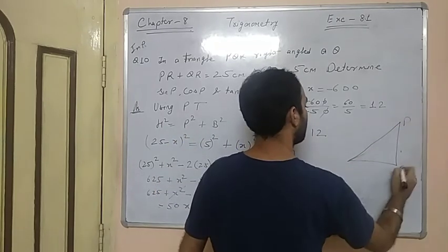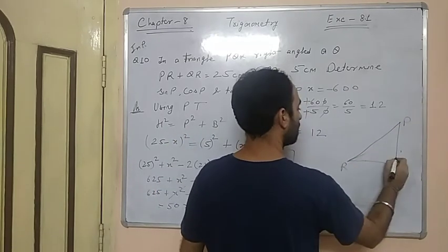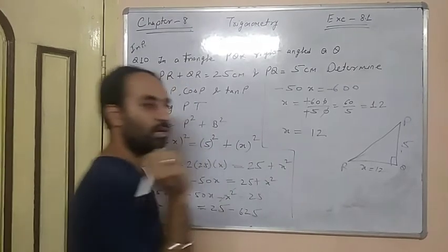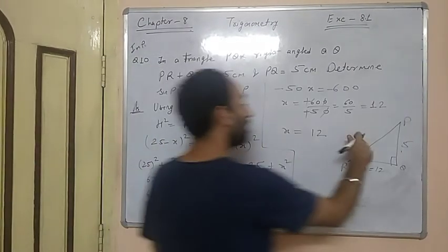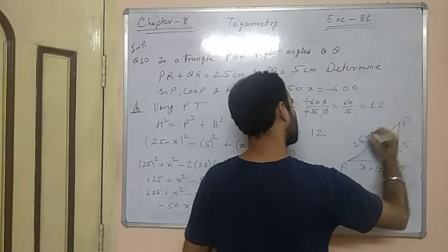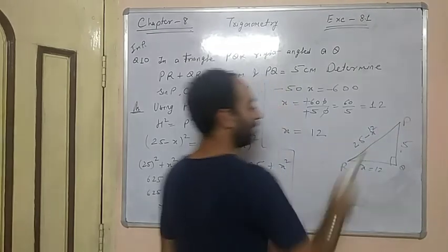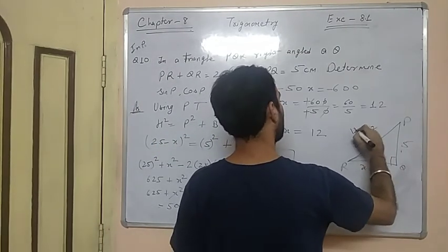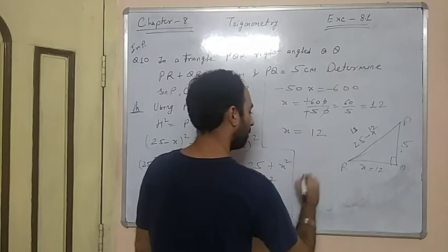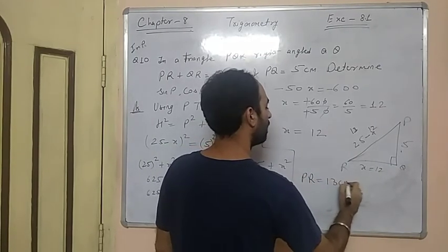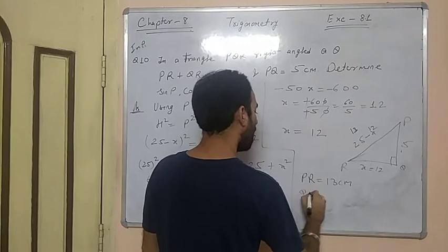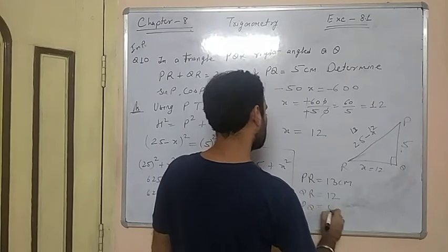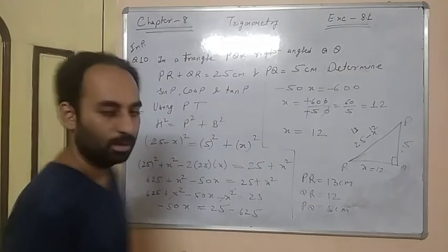So in the triangle, P, Q, and R are the vertices. QR equals x, which equals 12 cm. PR is 25 minus x, so 25 minus 12 equals 13 cm. Therefore PR equals 13 cm, QR equals 12 cm, and PQ equals 5 cm.